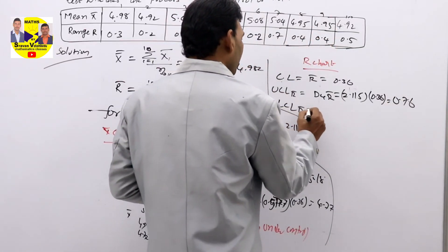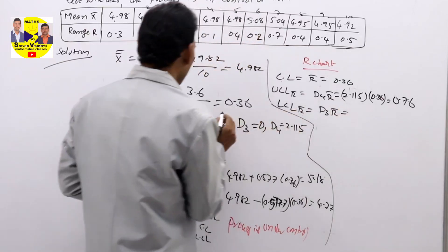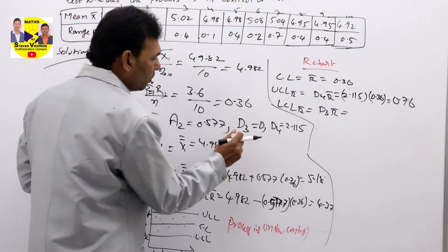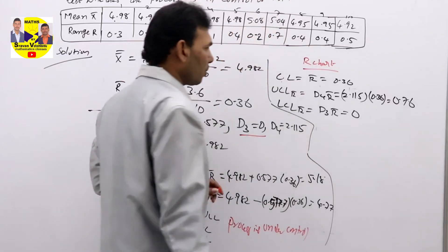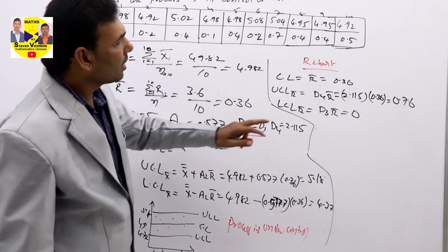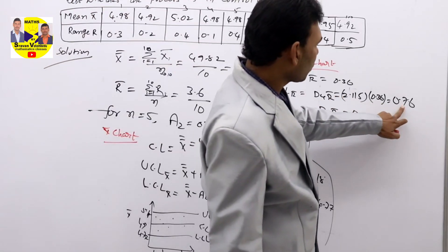LCL bar, you will get D3 R bar. We have seen that the table value D3 is 0. D3 is 0 means 0 into anything is 0. So here upper control line is 0.76, this is horizontal line.